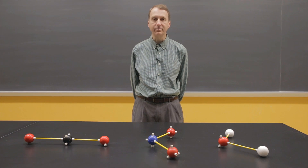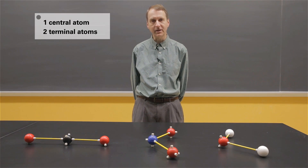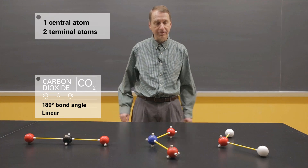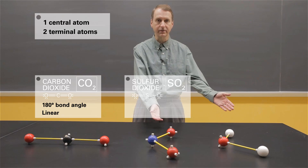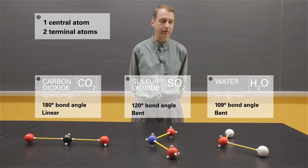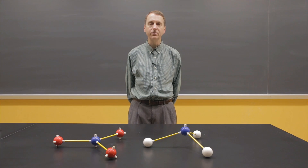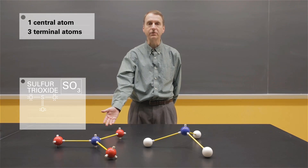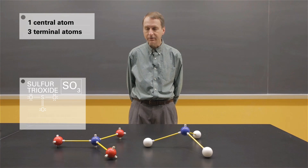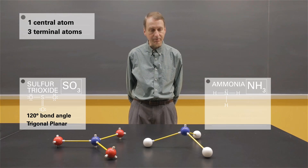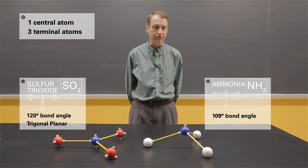If we look at molecules with one central atom and two terminal atoms, there are two possibilities for the shape. With carbon dioxide and only two electron groups, the molecule is linear. With three or four electron groups — as in sulfur dioxide or water — the shape is bent, although the two bent molecules have different bond angles: 120 degrees in SO2 and 109 degrees in water. For molecules with a central atom and three terminal atoms, in sulfur trioxide we have 120-degree bond angles and the molecule is trigonal planar. In ammonia, the lone pair adds a fourth electron group, giving 109-degree bond angles and a pyramidal shape.